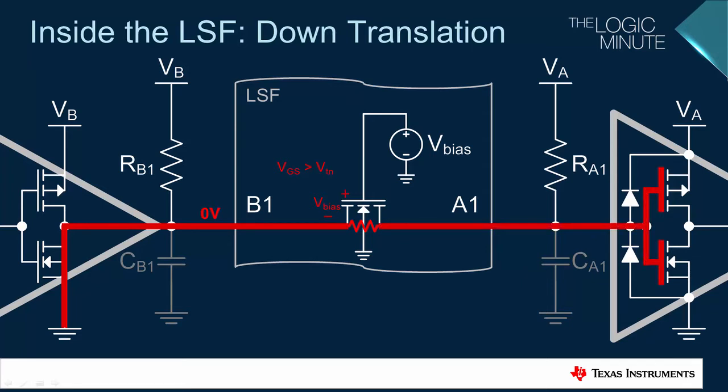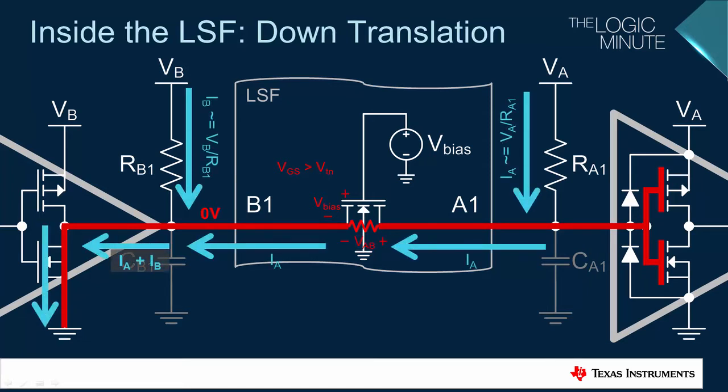It's important to note that in this state, current will be generated by both pull-up resistors, and that current will sink into the transmitter. The current, Ia, passing through the FET will produce a small voltage drop, shown here as VAB, and therefore the voltage at A1 and the input to the receiver will be slightly higher than the voltage at B1.